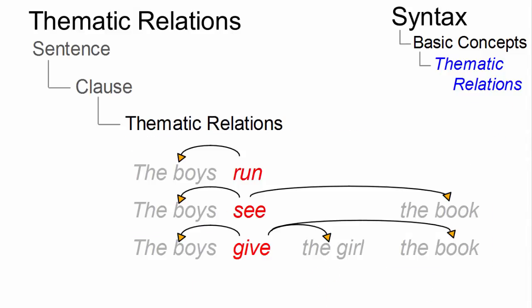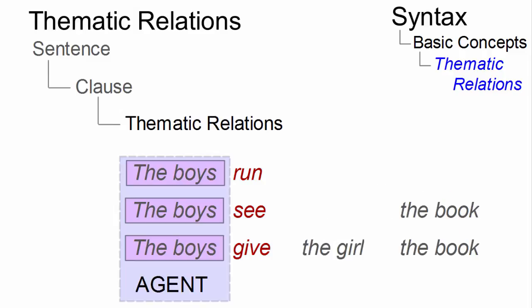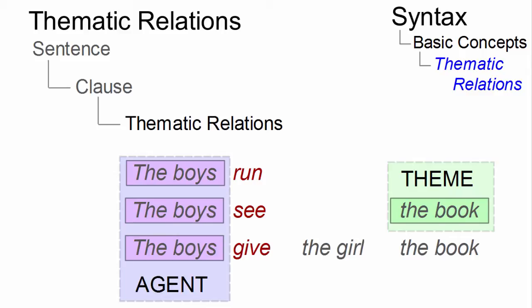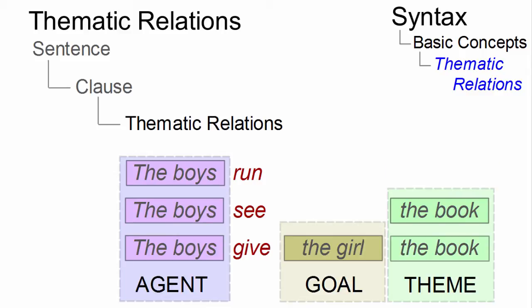Each verb determines its thematic relations. In all three verbs, the subject — which is normally a noun phrase — must be an agent, that is, someone who deliberately performs the action. In 'see' we additionally have a theme, an element that undergoes the action but does not change its state, and in 'give' we also have a goal, to which the action is directed.